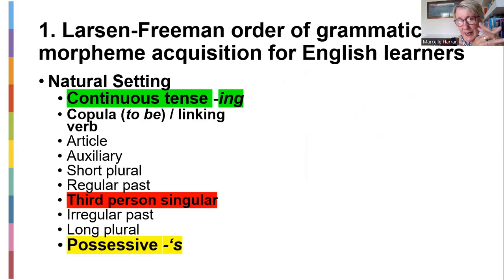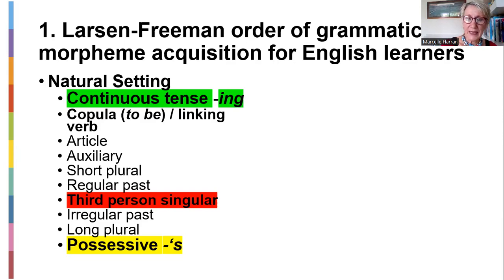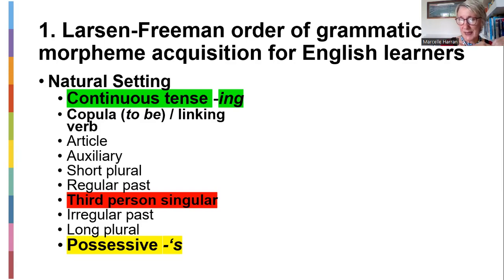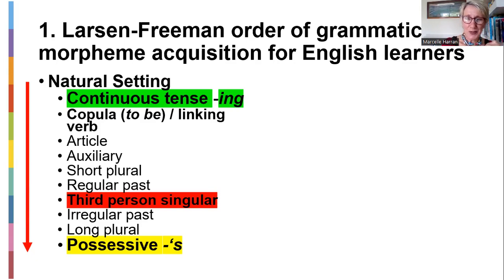In a natural home setting, the first thing a child acquires is the continuous tense — 'ing': 'I sleeping,' 'I jumping,' 'I running.' That's easy to acquire early on. Third person singular is much further down the list and normally quite difficult: he sleeps, she sleeps, it sleeps, John sleeps, Mary sleeps. The most difficult to acquire is the possessive — the use of the apostrophe.